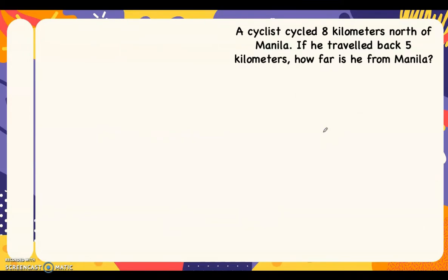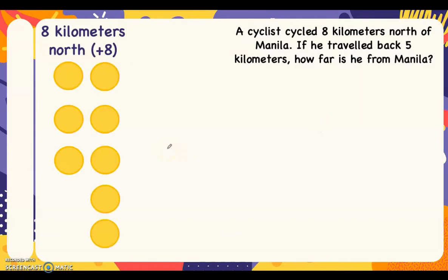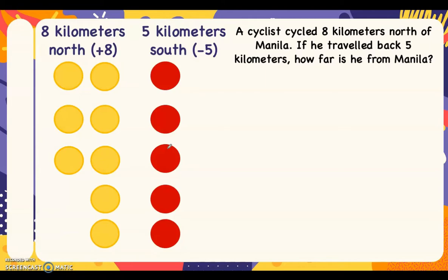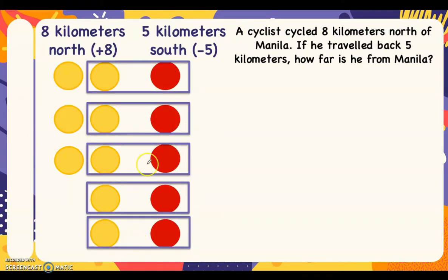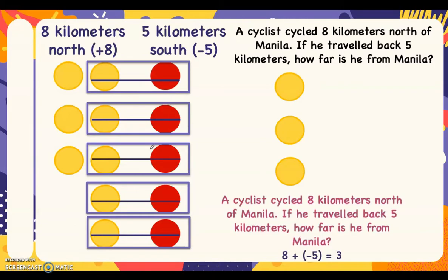Going back to our problem: the cyclist traveled eight kilometers north, so we represent that with eight yellow chips. He then went back five kilometers south, represented by five red chips. We look for zero pairs — there are five zero pairs, and each pair cancels out to zero. The remaining chips are three yellow chips. Therefore, the cyclist is three kilometers away from Manila. So eight plus negative five is equal to three.